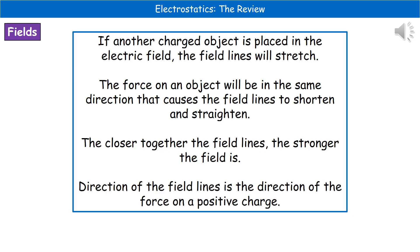If we take our charged object and place it within the electric field, the result is that the field lines will stretch. They behave like a rubber band. There will be a force that acts on the object to try to shorten and straighten those field lines back out. That force will be in the same direction that would cause the field lines to become shorter and straighter. A couple of other things to bear in mind: the closer our field lines are, the stronger our field is. And if we look at the direction of the field lines, that's the direction of the force on the positive charge.